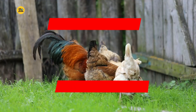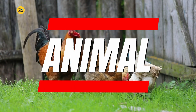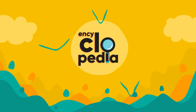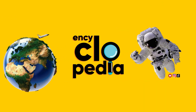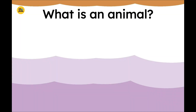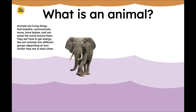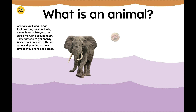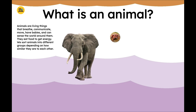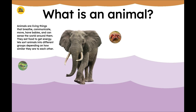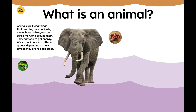Let's find out about animals. What is an animal? Animals are living things that breathe, communicate, move, have babies, and can sense the world around them. They eat food to get energy. We sort animals into different groups depending on how similar they are to each other.